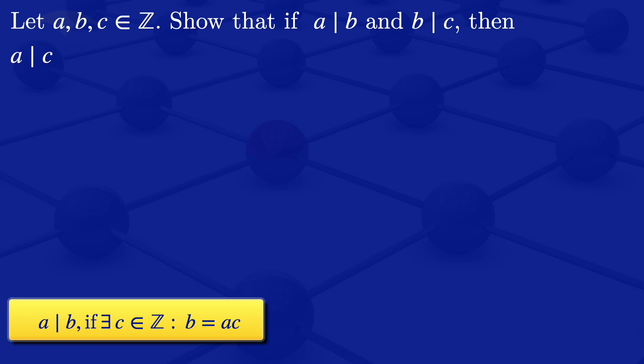So in this case we have A divides B if there exists an integer C1 such that B is equal to AC1. In this case I used an integer C1 to differentiate it from the C that we have there.